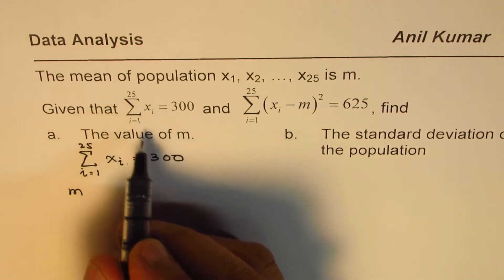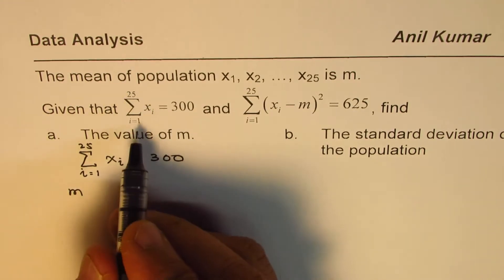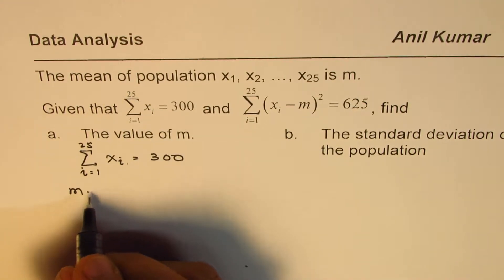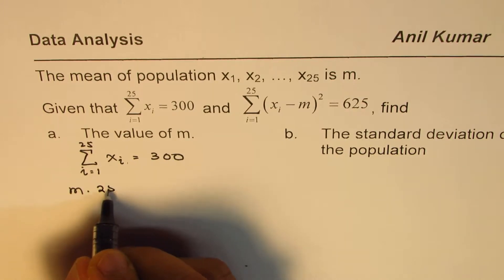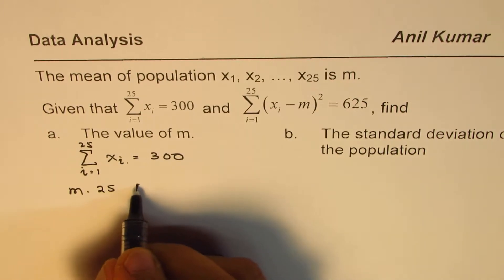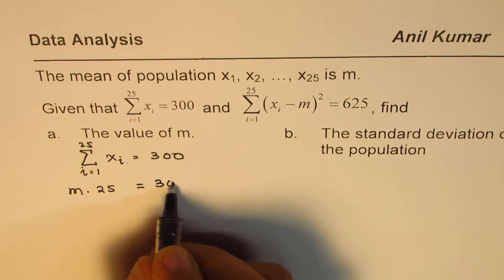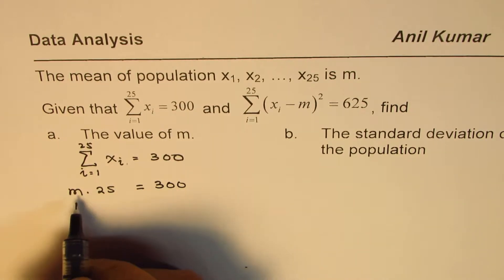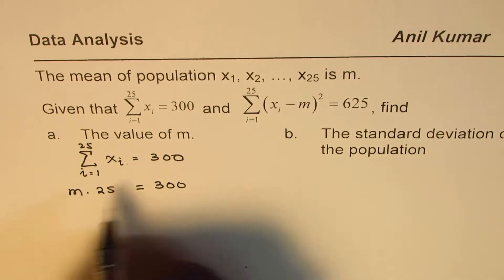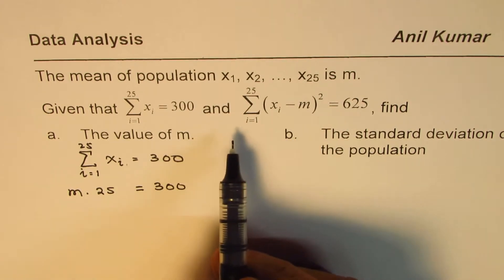Mean times 25, the number of elements, should be equal to 300. If m is the mean, the average mass of, let's say, if there are people, the average mass of that population, in that case that into number of persons or elements in this population should be 300.